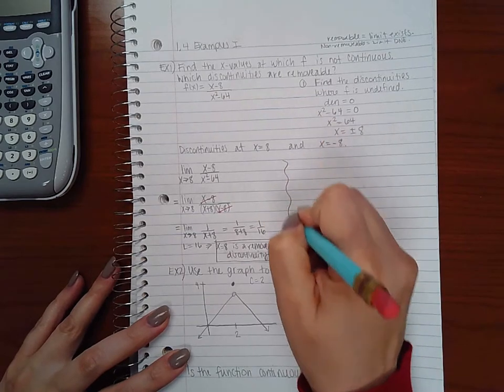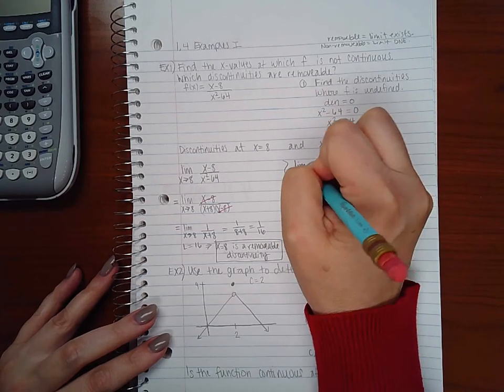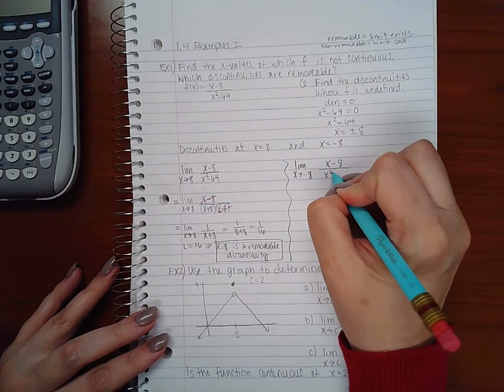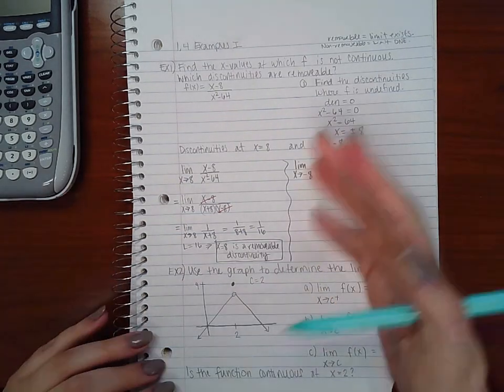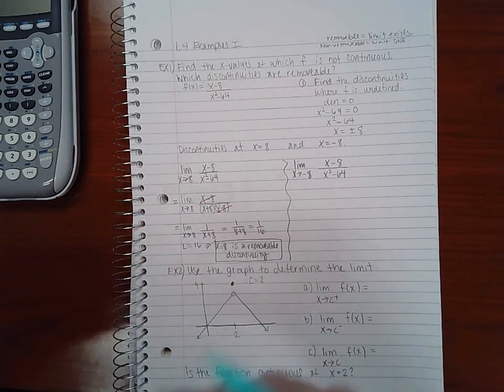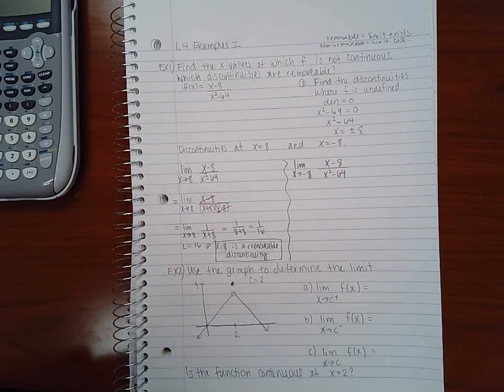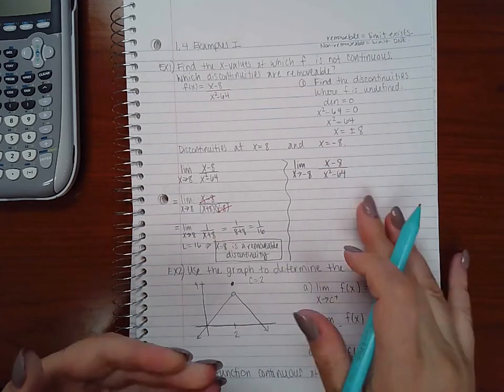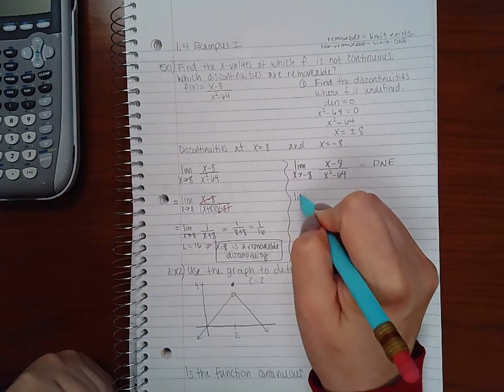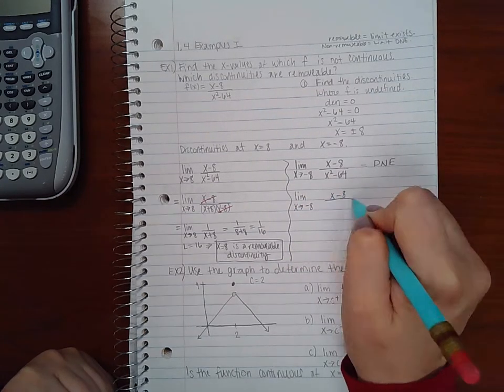Now we're going to do the same thing but for x equal to negative 8. So we're going to take the limit as x approaches negative 8 of x minus 8 over x squared minus 64. Now in this case if we plug in negative 8 we'll get negative 16 over 0 which is undefined. That doesn't really help me to determine the limit, but it's not one of the indeterminate forms.